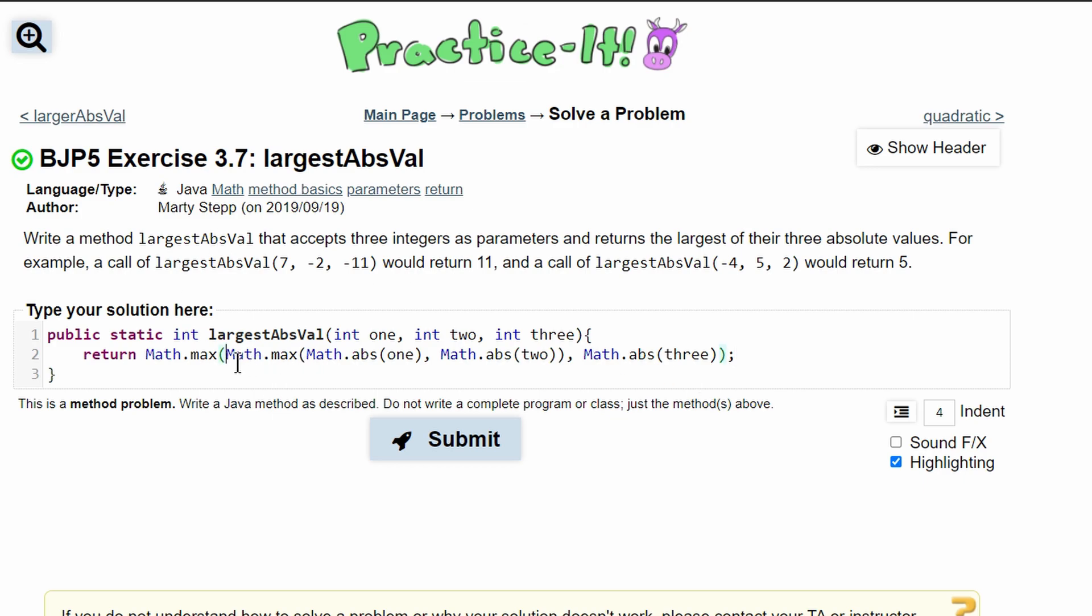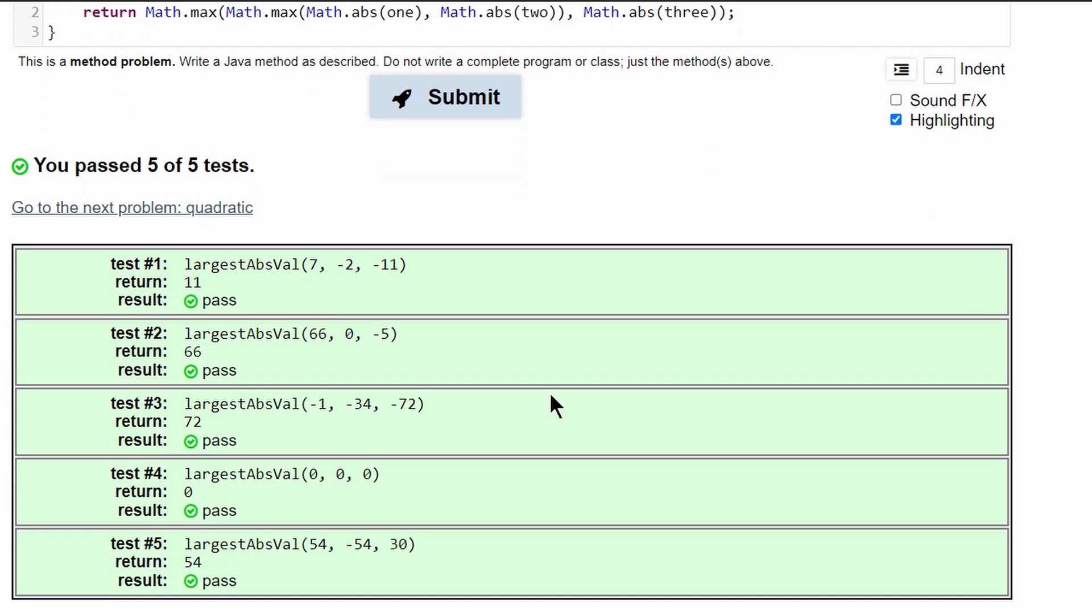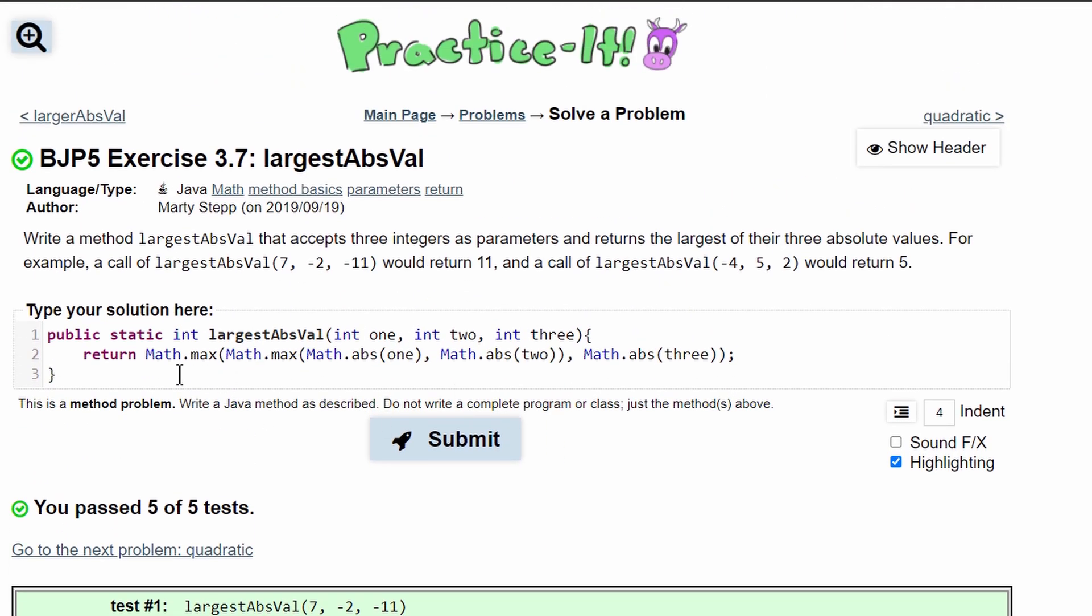So what this does is it converts everything to absolute values, so it's all going to be positive. This part compares the first two, and then this part compares the highest between the first two and the third one. We passed all five tests, so this is the code that will give us the desired output.